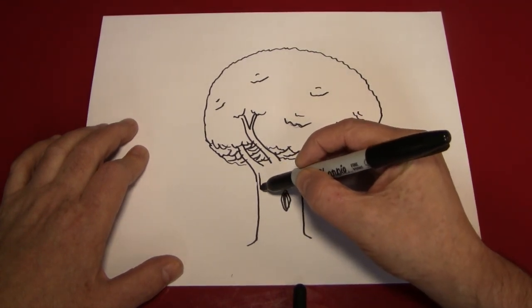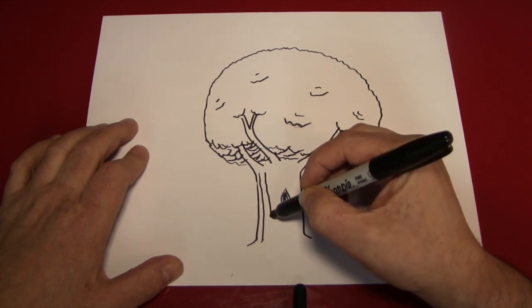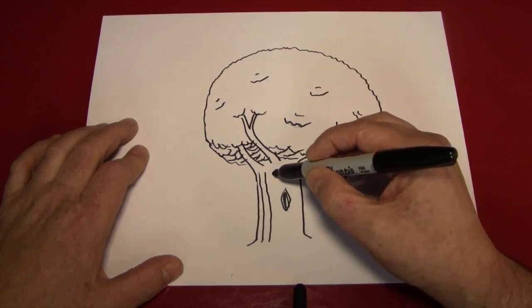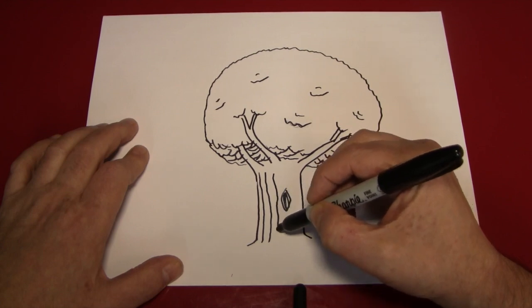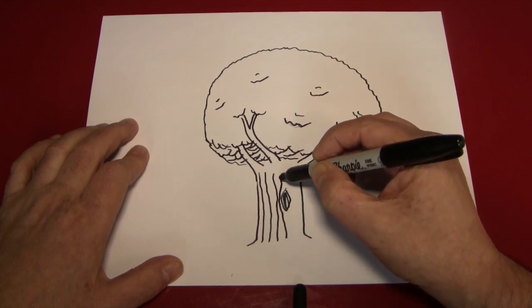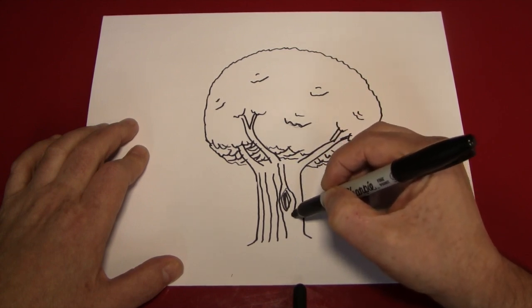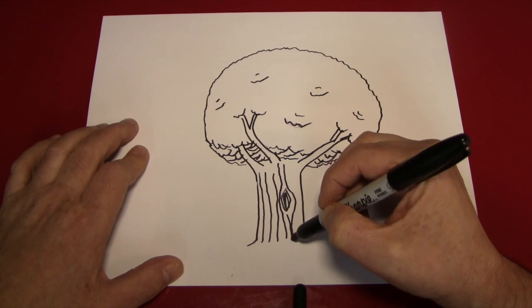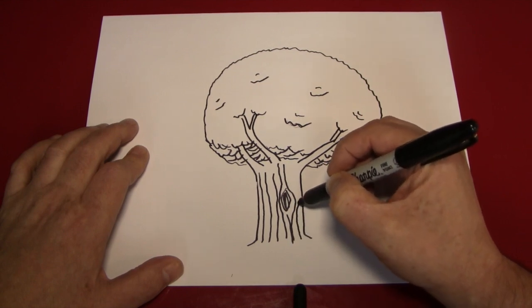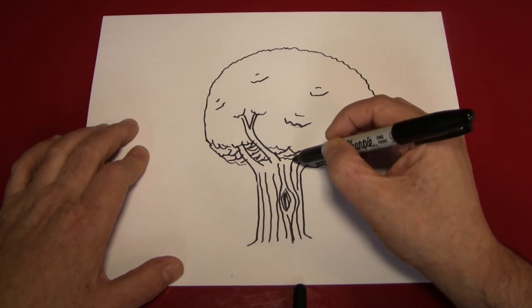And that's all you really have to do is just make little lines. If you want to get more detailed, you can go and look up different kinds of tree barks and figure out what the different kinds of patterns you would draw.